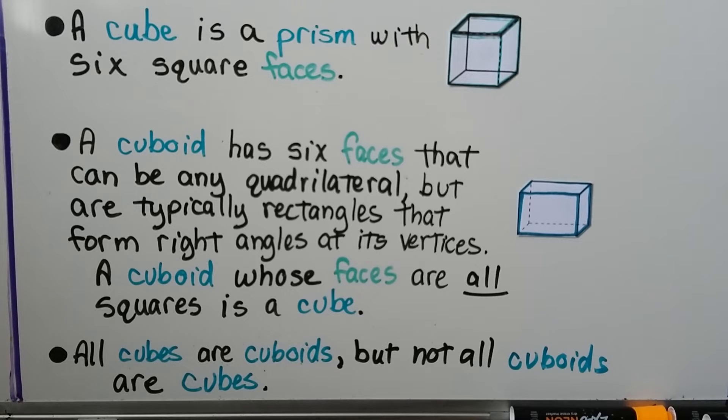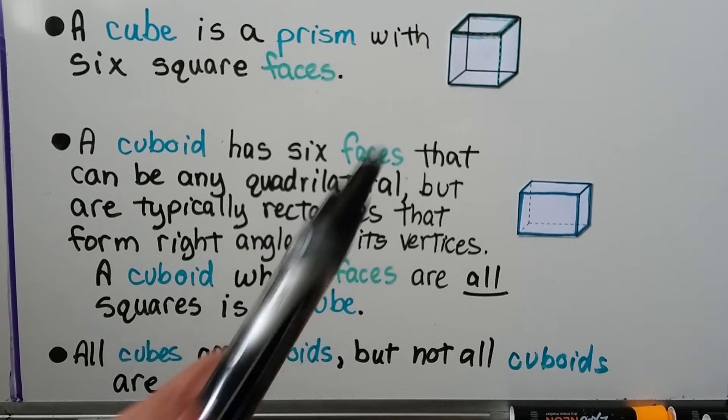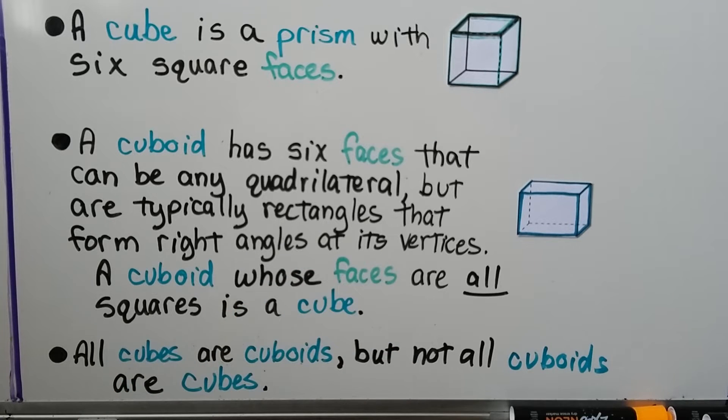A cube is a prism with six square faces, so they're all the same size. A cuboid has six faces that can be any quadrilateral but are typically rectangles that form right angles at its vertices. A cuboid whose faces are all squares is a cube. But all cubes are cuboids, but not all cuboids are cubes. It's like all poodles are dogs, but not all dogs are poodles, because the definition of a cuboid has a wider range than the definition of cube. It's a broader definition.